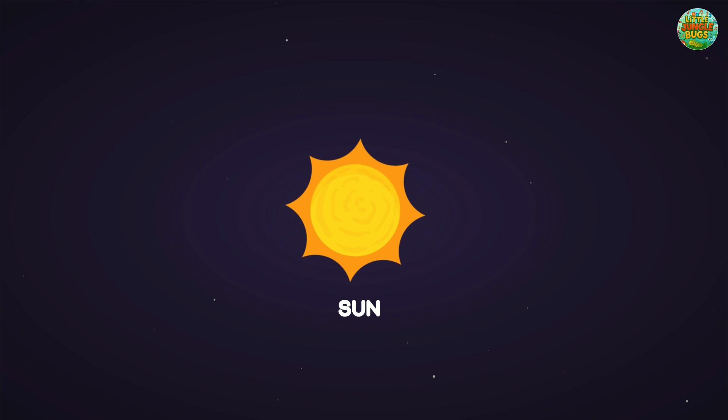Let's learn the solar system. Sun. The sun is the biggest object in the solar system. It gives us light and heat. Without the sun, we would not live.